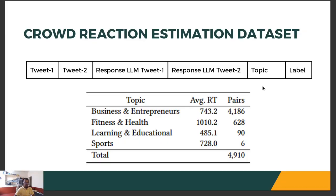Each instance of the crowd reaction dataset consists of the following: two tweets; responses when LLMs like Claude, ChatGPT, and Flan-T5-XL2 are prompted to answer why these tweets are engaging; the topic of these tweets; and the label, which denotes if the first tweet will be retweeted more than the second one.